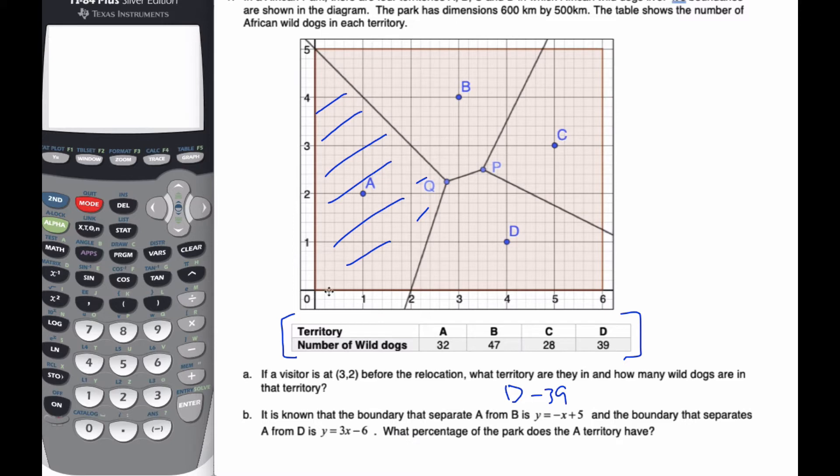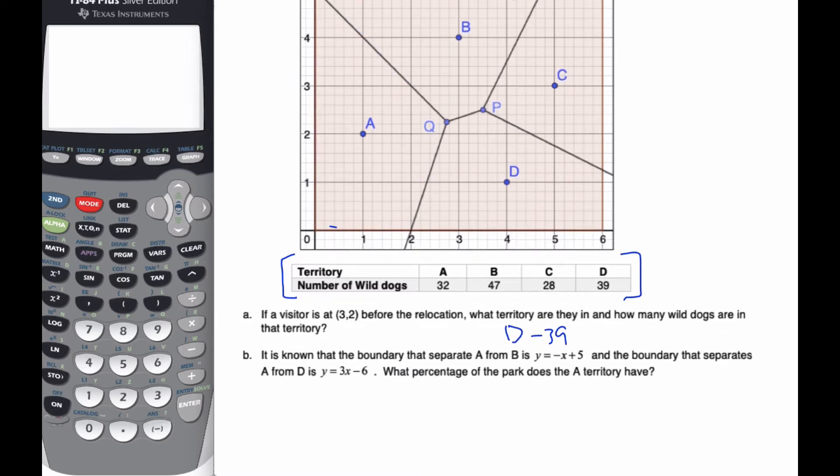I know the total area is going to be 600 times 500 kilometers. We want to find the area of area A. To find the area for area A, I have to break it up into regions. I can break this down and find the area of this triangle, and then I also have a trapezoid here. The area of a trapezoid is half the height times A plus B, where A and B are the bases.